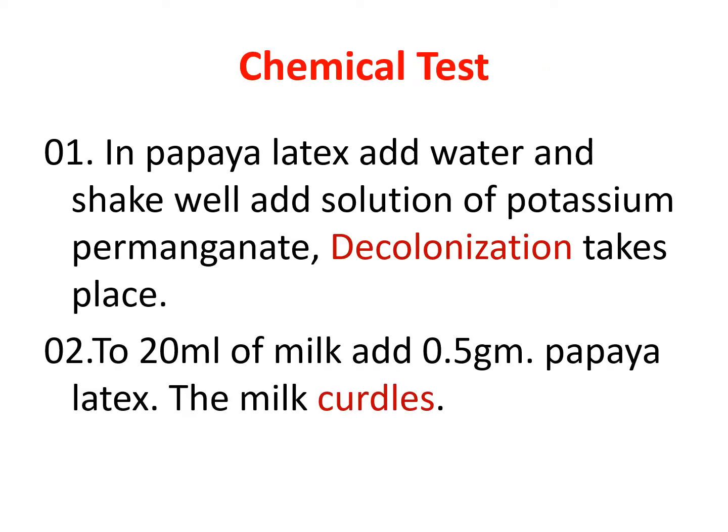Papain follows two chemical tests. First test: in papaya latex and water, if we shake this mixture well and add potassium permanganate solution, decolorization of the permanganate solution takes place. Second test: in 20 ml of milk, if we add 0.5 gram of papaya latex, the milk curdles.